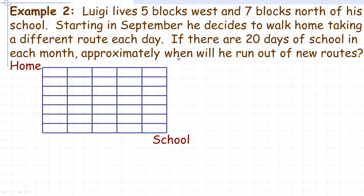On to the last example. Luigi lives five blocks west and seven blocks north of his school. Here's his home right here, and here's his school. There's the five blocks west, and then one, two, three, four, five, six, seven blocks north. Starting in September, he decides to walk home a different route every day. If there are twenty days of school in the average month, approximately when will he run out of new routes?